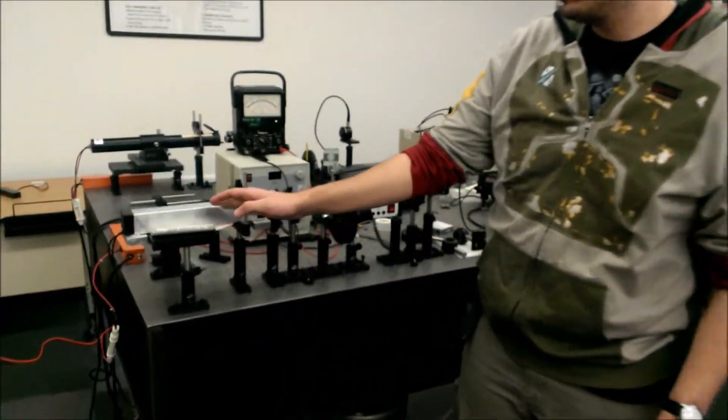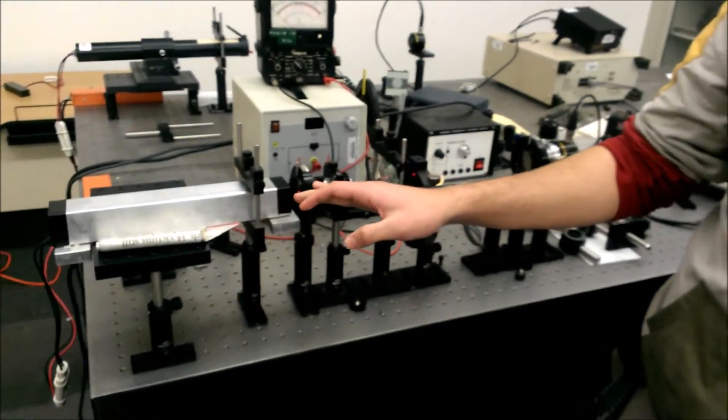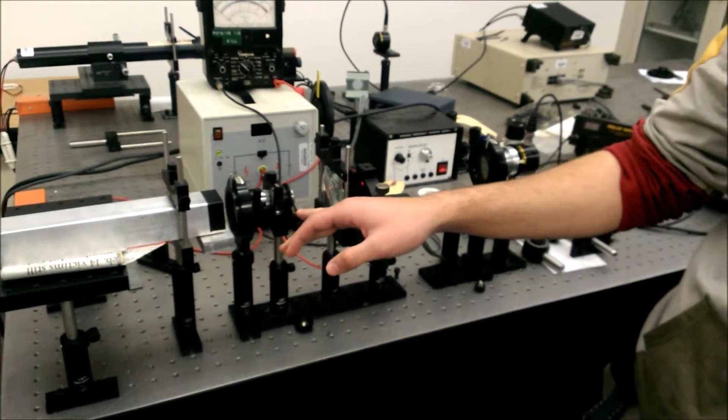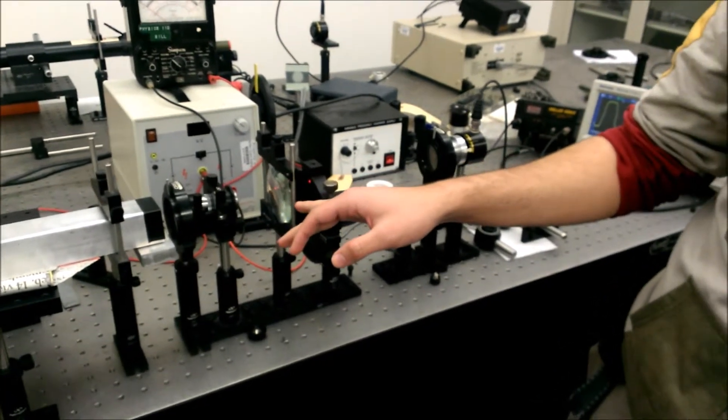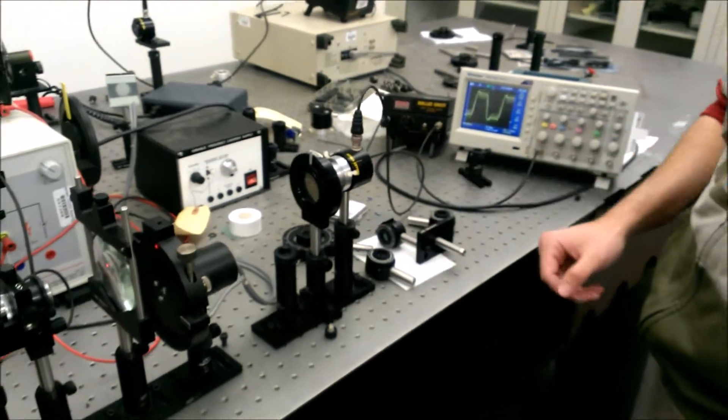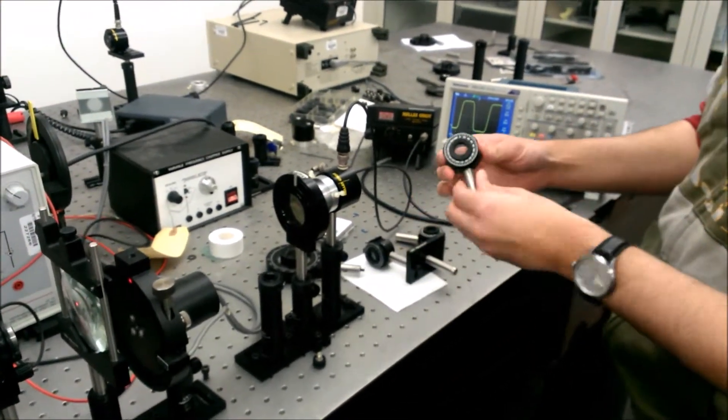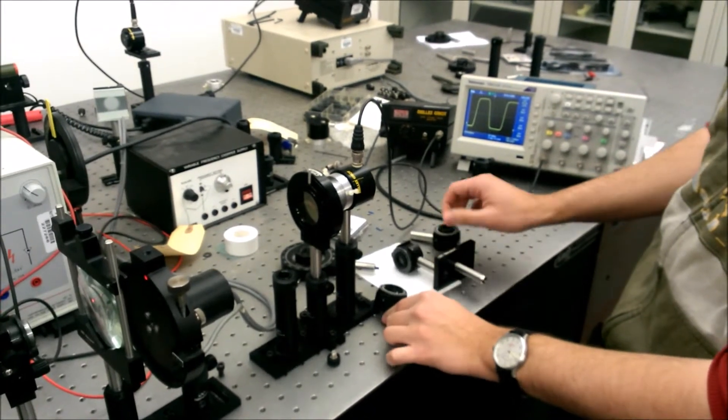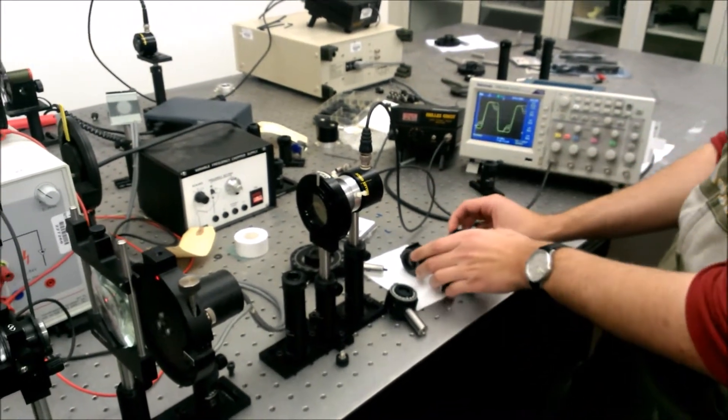As before, we have our helium neon laser, a polaroid that polarizes our light, a spatial filter, a collimating LED system, a chopper, and our analyzer. And we have half wavelength retard plate, quarter wavelength, and an unknown wavelength retard plate.